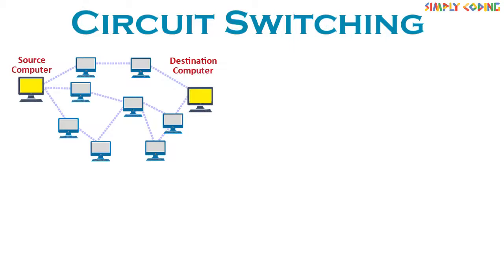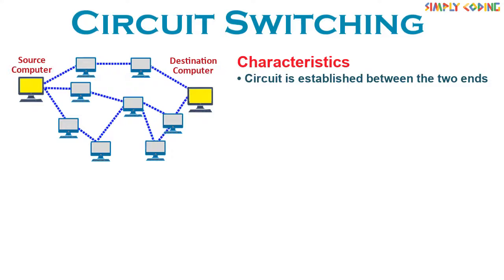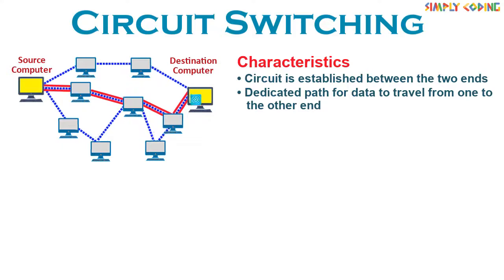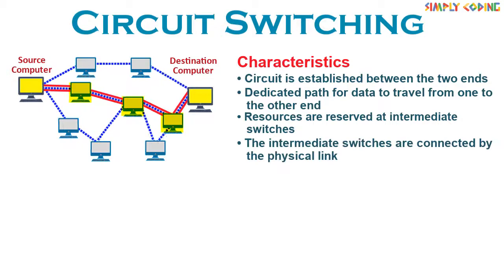In circuit switching, a circuit is established between the two ends. It provides a dedicated path for data to travel from one end to the other. Resources are reserved at intermediate switches which are used during the transmission. The intermediate switches are connected by physical links. Once the circuit is established, the entire data travels over the dedicated path. As soon as the data transfer completes, the circuit is disconnected.